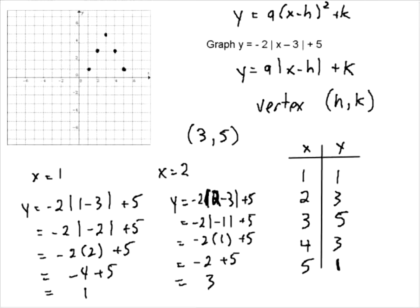And once we have our points, sketch in our V. We know it's always going to be that V shape, absolute value. Check some arrows on the end and problem solved. There is the graph of Y equals negative 2, absolute value of X minus 3 plus 5.